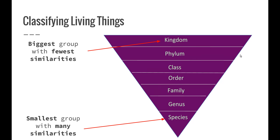The species is the smallest group with many similarities — you only have one species. Humans are Homo sapiens. All Homo sapiens have the same types of properties or features, and there is obviously variation within that species, but we are all bipedal, we all have a large cerebrum, we are all able to form speech, and all able to carry out logical thought.